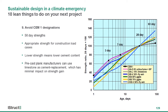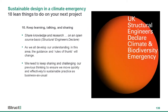Number nine: avoid CEM1 designations. We don't really need CEM1 in our concrete — you can have even small percentages of cement replacement. Typically now, if you go to market, you have at least 20% or so of some replacement in your concrete. Specify 56-day strengths wherever possible, particularly for substructure. Use appropriate strengths for construction load cases — lower strength wherever possible. Even with precast, you can use limestone as a cement replacement, as it has minimal impact on strength gain.